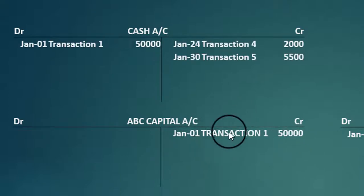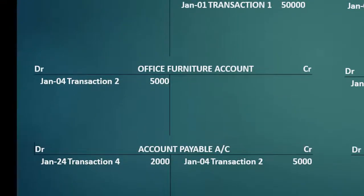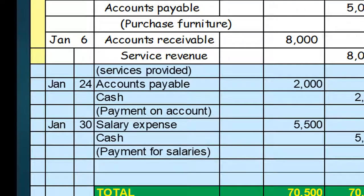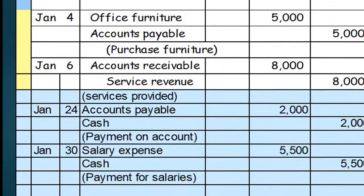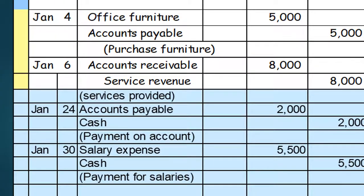January 1, transaction 1: 50,000 in cash; January 1, transaction 1: 50,000 in ABC capital. If we put these entries simultaneously, you will never make any mistake. But if you post cash entries first, searching through all cash entries, then ABC capital entries — in real time you may have 30 to 40 entries, and that will be very troublesome. So go entry-wise, meaning complete debit and credit posted simultaneously to respective accounts.